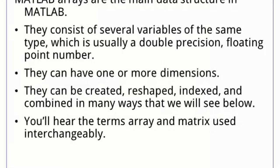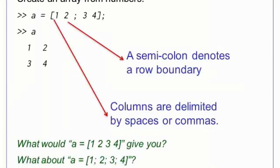The main data structure in MATLAB is an array of double-precision floating-point numbers. Arrays can have one or more dimensions, and they can be manipulated and combined in many ways. Many applications utilize two-dimensional arrays as matrices, so you'll hear us use the terms array and matrix interchangeably. However, if we say matrix, we always mean an array with two dimensions. Arrays can be created from the MATLAB prompt. When you assign an array, the entire set of numbers is enclosed in brackets. Elements in the same row are separated by spaces or commas, and a semicolon denotes a row boundary. Just like in linear algebra, a row array is different from a column array.